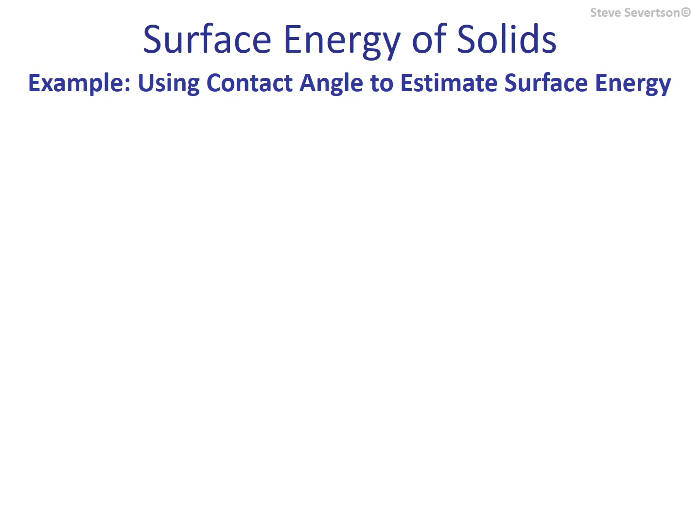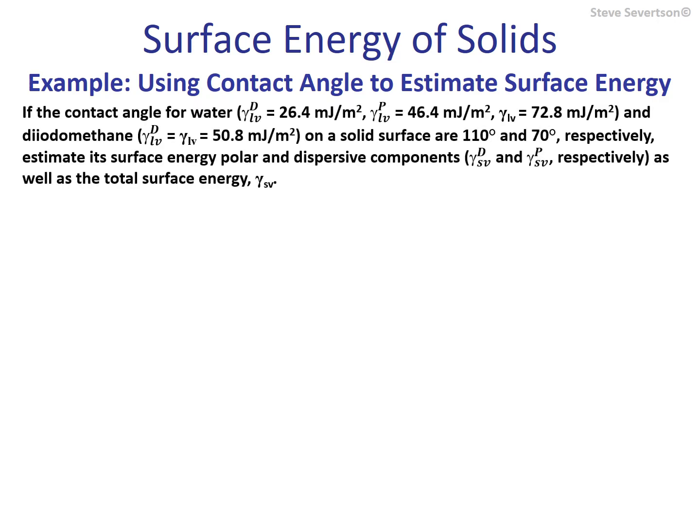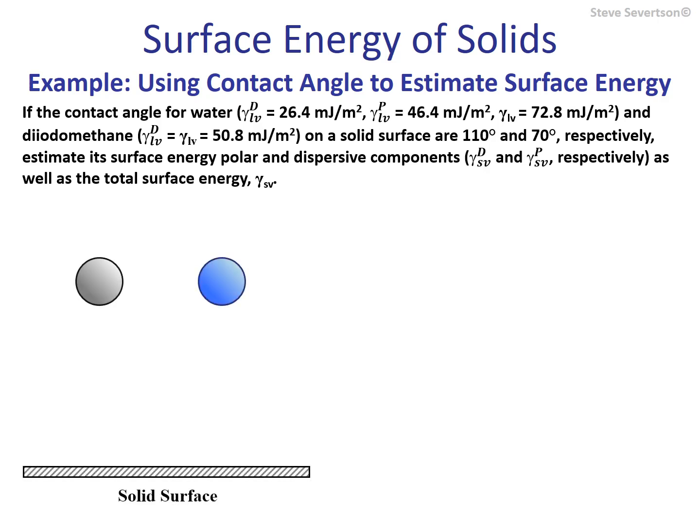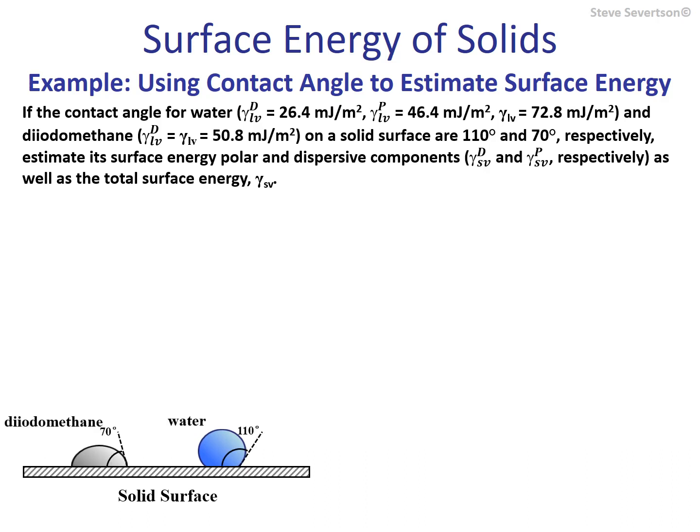This slide reviews an example of how we can estimate the surface energy of a polymeric material using contact angle measurements, using the FOWKES approach. The example asks: if the contact angle for water and diiodomethane on a solid surface are 110 degrees and 70 degrees respectively, estimate the polar and dispersive components as well as the total surface energy. We have a sample of this polymeric material, went into the laboratory, and measured the contact angles for both water and diiodomethane on the surface of this material.